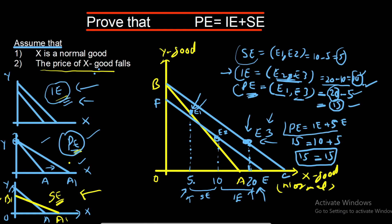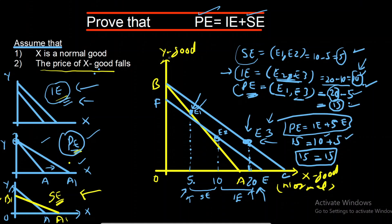Putting all values into the equation — price effect = income effect + substitution effect — we get 15 = 10 + 5 = 15. Left-hand side equals right-hand side, proving that in case of a normal good, price effect is equal to income effect plus substitution effect. If you want to see the concept for inferior goods and Giffen goods, including a combined graph showing all three, links will be in the description and I button. Thank you, Allah Hafiz.